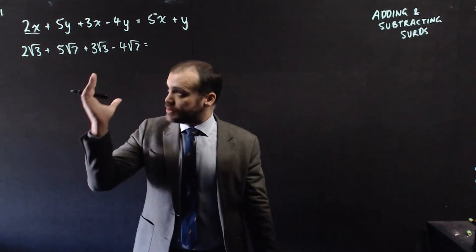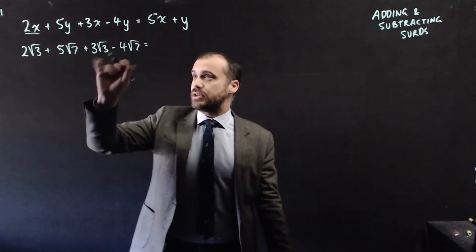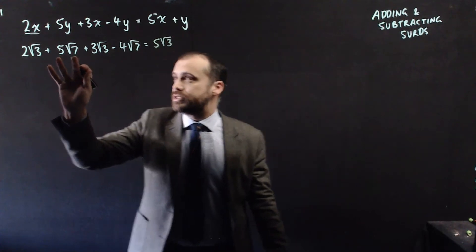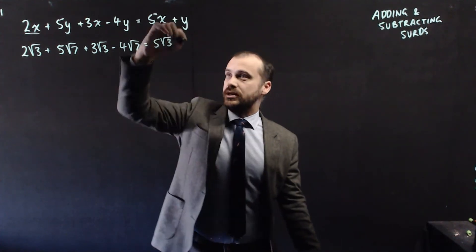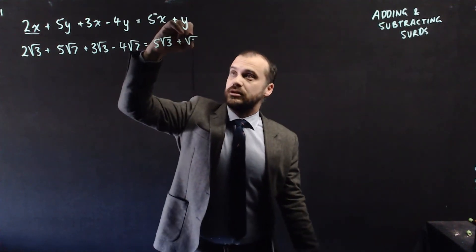So to add these or subtract these, 2 root 3 plus 3 root 3 is 5 root 3. And 5 root 7 minus 4 root 7 is plus 1 root 7, which is just root 7.